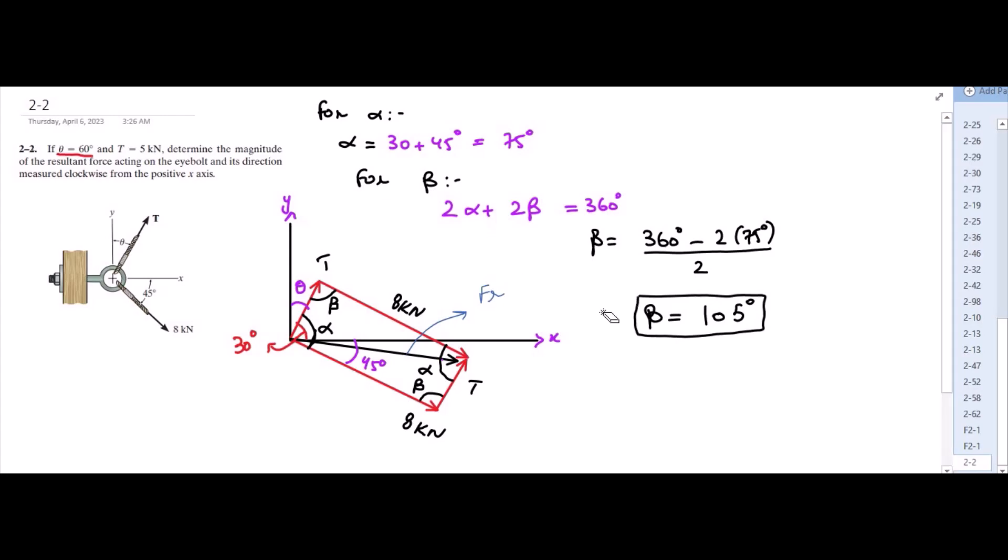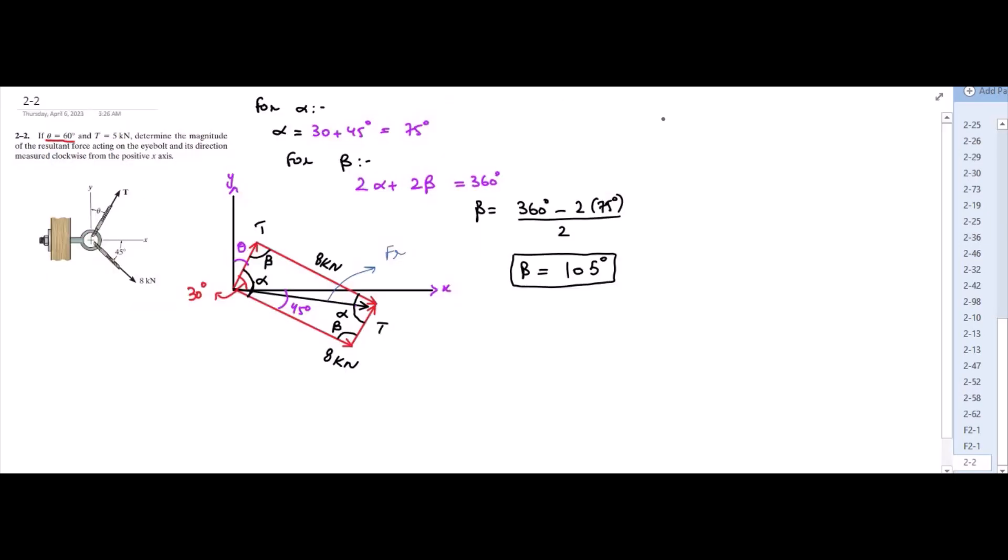Now we have to find the magnitude of the resultant force. We could apply the cosine law. So FR is equal to square root of 8 squared plus T squared minus 2 times 8 into T cos beta. We know that beta is equal to 105 degrees and T is equal to 5 kN which is given to us in the problem. So from here FR is equal to 10.474 kN. Now this is our first answer.